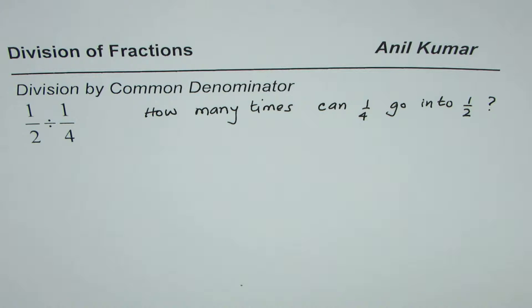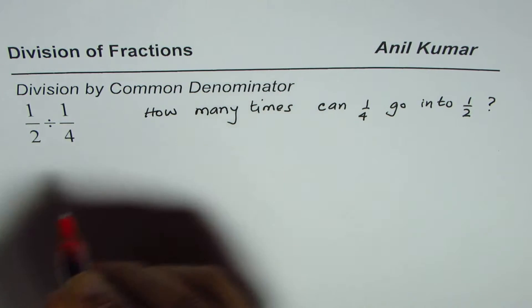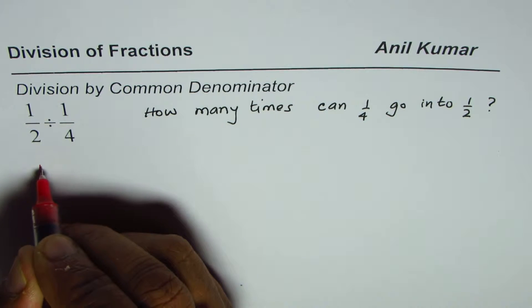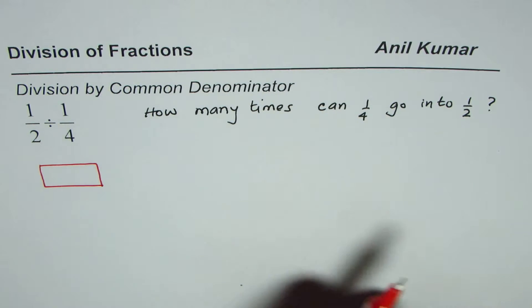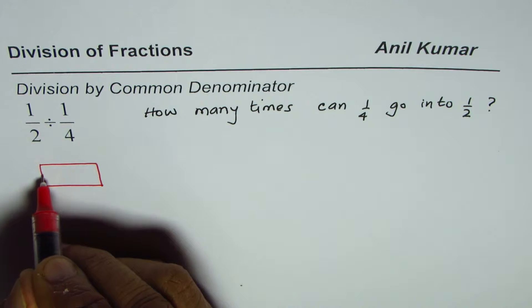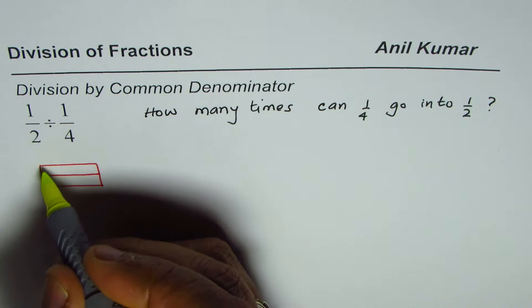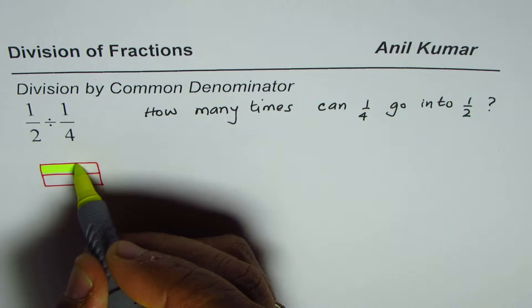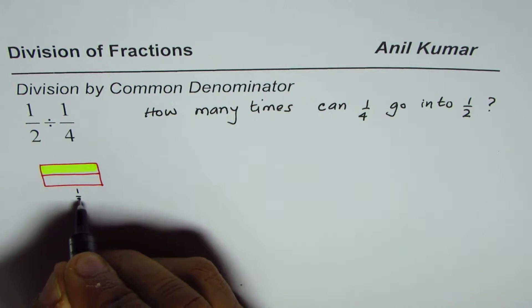Let's have a visual look at half divided by one-fourth. We can represent half by a rectangle divided into two portions. When you do that, selecting one gives us half. So this is half for us. We need to divide half by one-fourth.